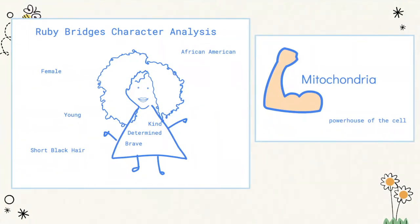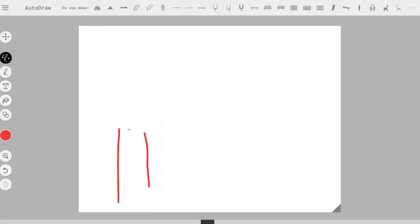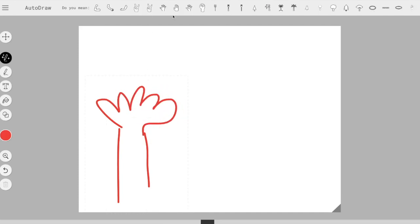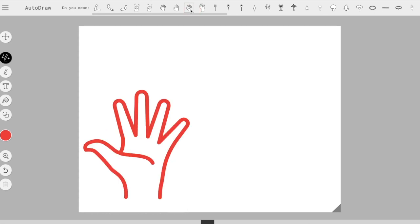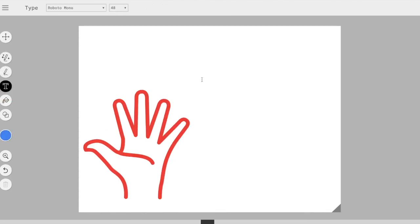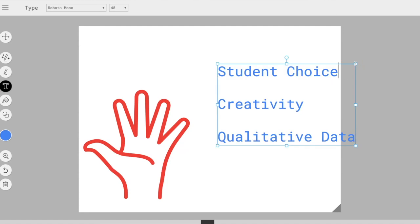For example, students could explore external and internal character traits in ELA, draw a word problem for math, practice identifying and drawing vocabulary for science, or create a concept map of a lesson learned in social studies. AutoDraw provides students with choice and the ability to create, make mistakes, and have fun with their learning. It provides you qualitative data and it's a fun, different way to start or end your lesson.